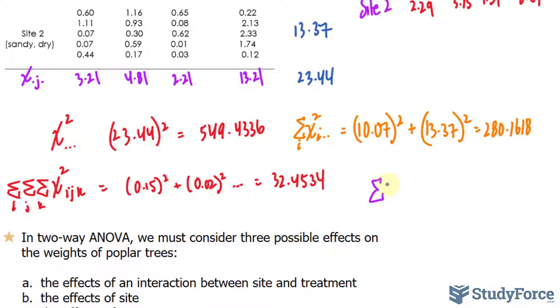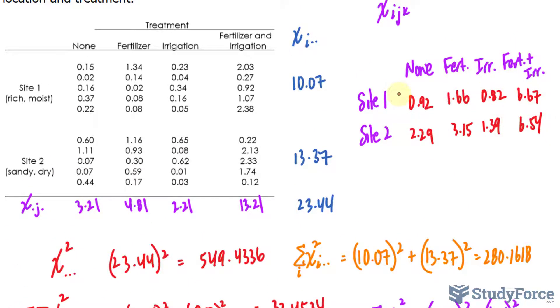We need to do the same sort of thing for these values. So we have the sum of x sub dot j dot raised to the power of 2 and we have 3.21 raised to the power of 2 plus 4.81 raised to the power of 2 and so on. The sum should be 212.8284. There's one last sum and it is these values right here. So we'll take each of these values, square them and add them up just like this. That's represented as the sum of i and the sum of j, x squared i j dot. You should end up with a total sum of 108.6336.